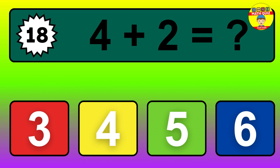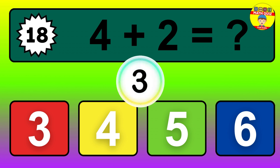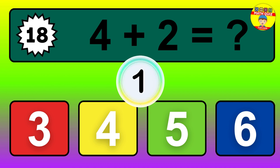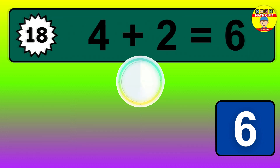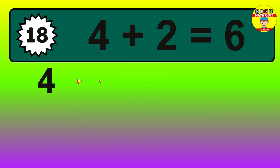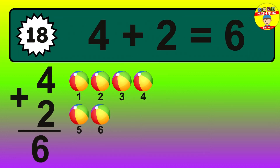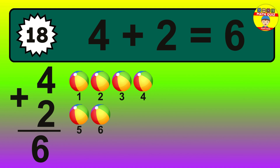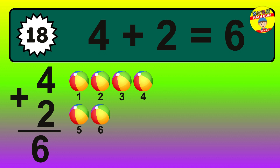Question 18. 4 plus 2 equals what? So the answer is 4 plus 2 is 6. Let's count it. 1, 2, 3, 4, 5, 6.